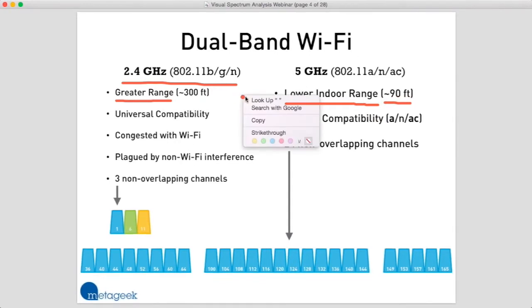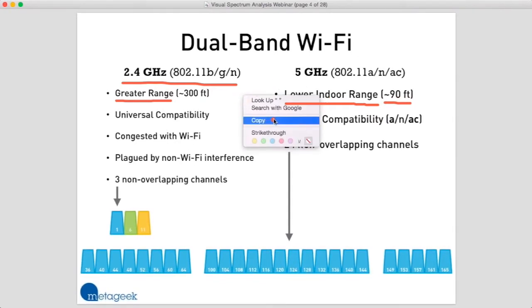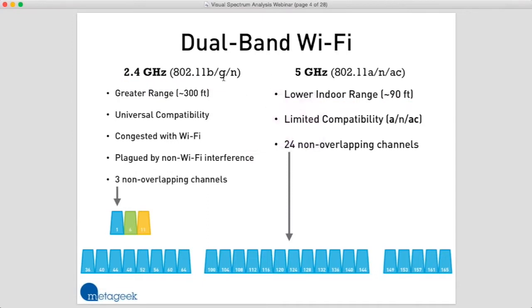Back in the day, two brand new wireless standards were introduced at the exact same time — 802.11b and 802.11a were both introduced in 1999 on the exact same piece of paper. 802.11a could hit a fast data rate of 54 megabits per second, but 802.11b was limited to 11 megabits per second.